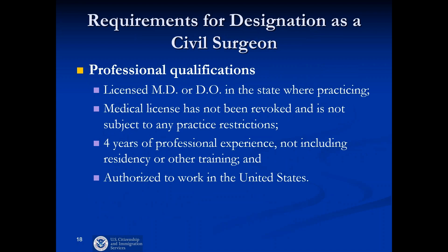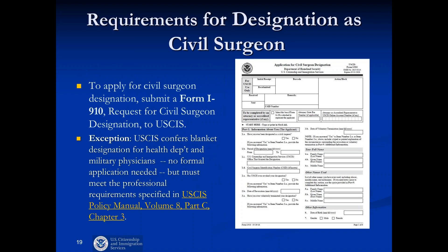Requirements for civil surgeon designation include: only medical doctors (MDs) or doctors of osteopathic medicine (DOs) are eligible, provided they are licensed in their state of practice; they must not be subject to any practice restrictions; they must have at least four years of practice after residency; and they must be authorized to work. USCIS can also give blanket designation to military physicians to conduct a full examination, and to health department physicians for conducting vaccine screening — with no formal application required for blanket designation.